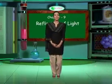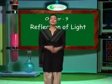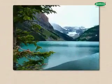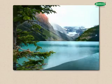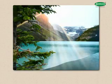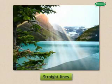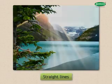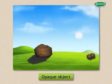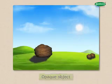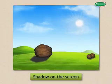Today let's learn a very interesting chapter: reflection of light. You know that from any source of light, light is transmitted in straight lines, and when an opaque object is placed in the path of light, it casts a shadow.